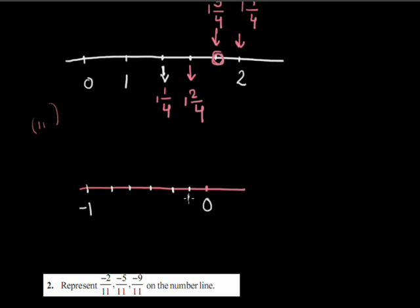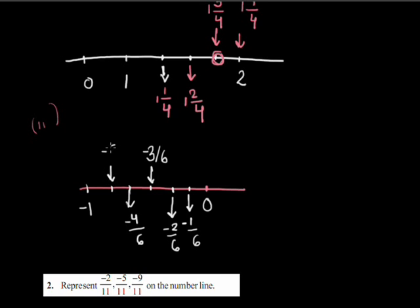I have divided the region between 0 and -1 into 6 equal parts. The first part is -1/6, the second is -2/6, the third is -3/6, the fourth is -4/6, and the last is -5/6. The final part would be -6/6, which equals -1. So we have plotted the number correctly.